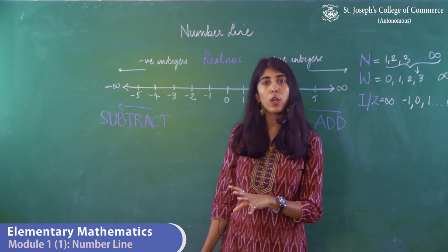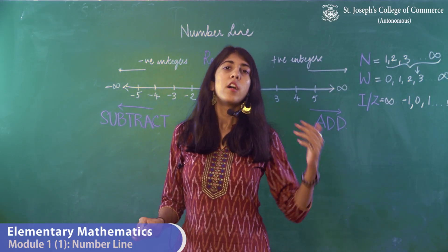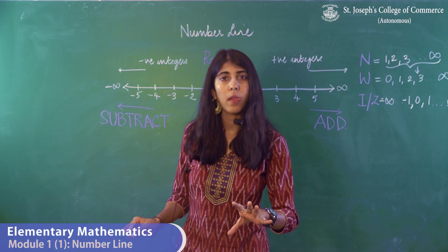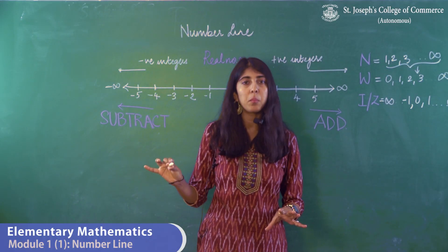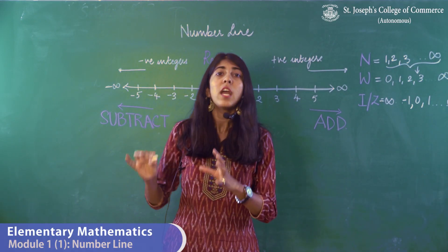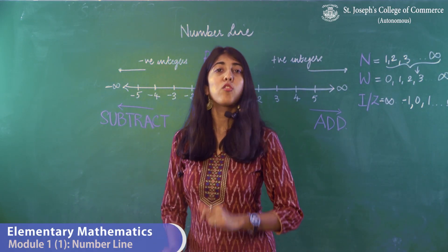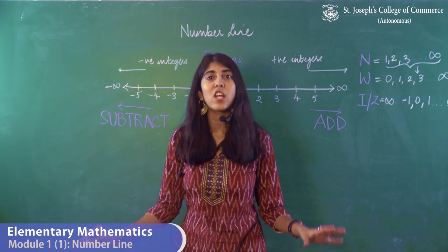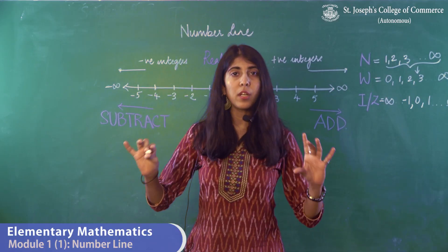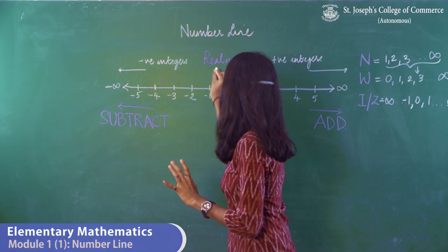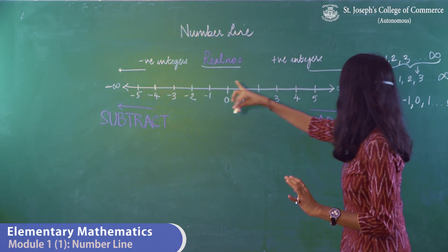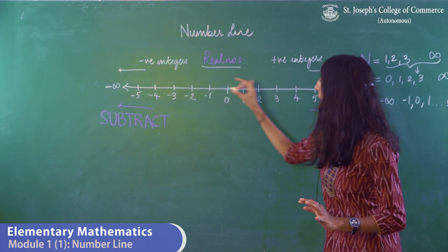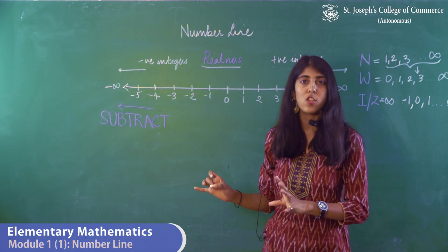The next thing we're going to look at are rational and irrational numbers. Rational numbers are numbers that can be represented in a ratio or a fraction form. Irrational numbers are any kind of numbers that cannot be expressed in a fraction or a ratio form. Real numbers are just a combination of rational and irrational numbers. The number line represents only real numbers, meaning a number line can only accommodate rational and irrational numbers.